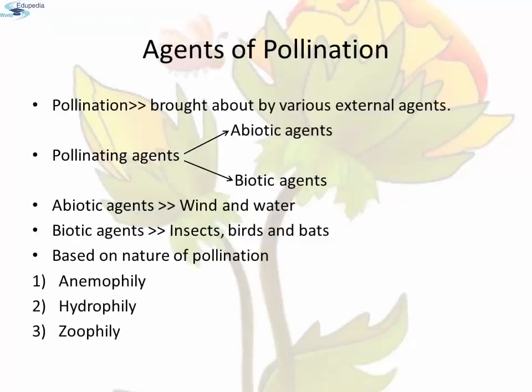Agents of pollination: Pollination is brought about by various external agents. The important pollinating agents are divided into abiotic agents and biotic agents. The abiotic agents are wind and water. The biotic agents are insects, birds, and bats. Based on the nature of pollinating agents, pollination may be of three types: anemophily, hydrophily, and zoophily.